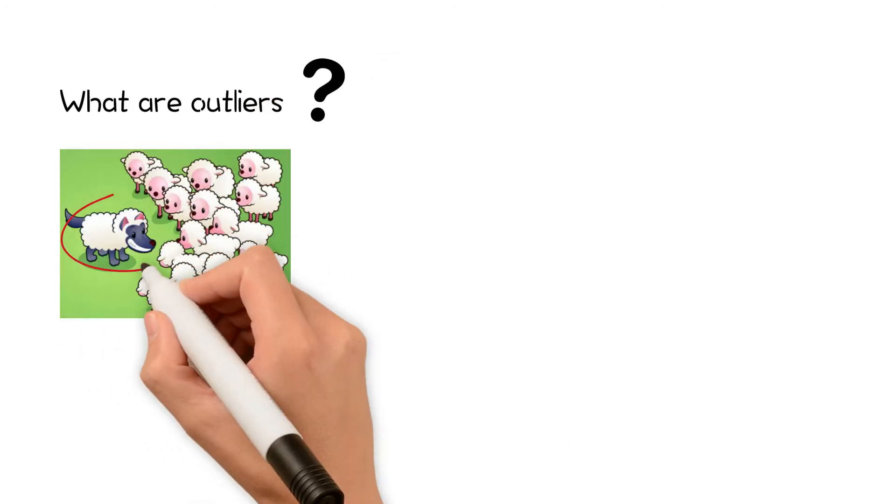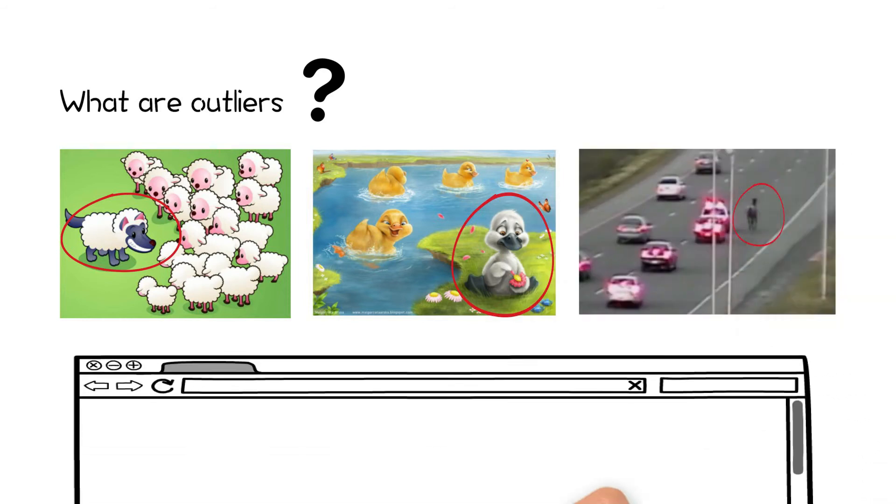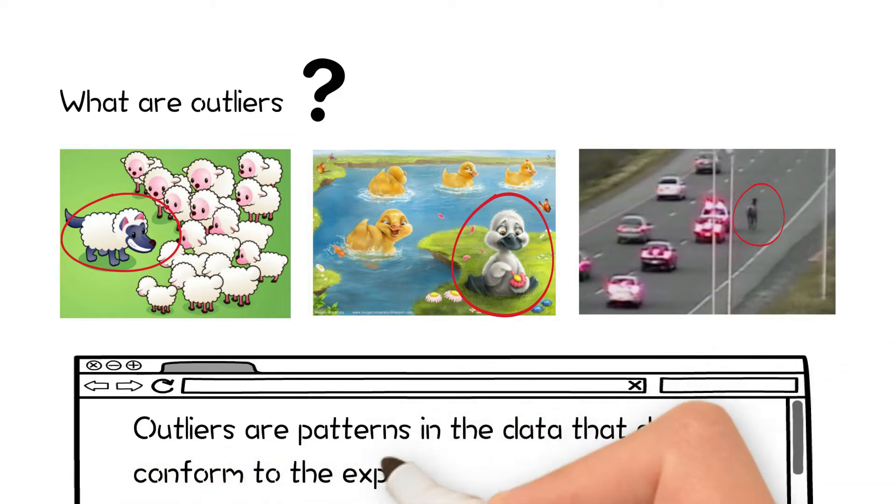What are outliers? Outliers are patterns in data that do not conform to the expected behavior.